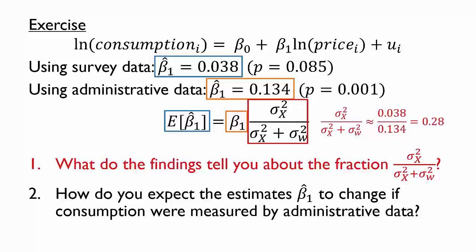Think for a moment about what this means. Sigma w squared must be quite large compared to sigma x squared to get a fraction this much less than 1. A large sigma w squared means a large measurement error in house prices. In fact, the typical reporting errors indicated by sigma w appear to be large compared to the variation in house prices across the sample, indicated by sigma x. It's rather surprising that the reporting errors would be so large. The authors point out that there may be other reasons the survey data produces biased results, but nonetheless the discrepancy suggests that the survey data on house prices may be subject to very substantial measurement errors.